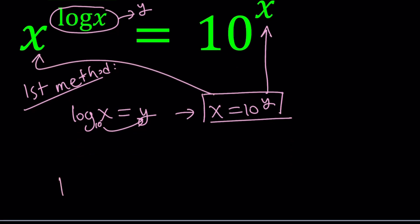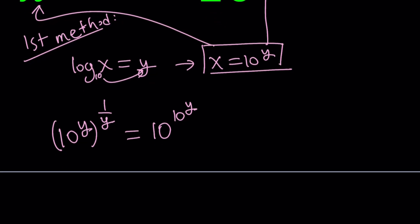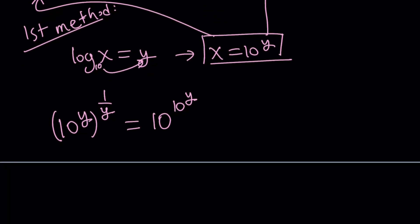Replace x with 10 to the power y. And then 1 over log x is just going to be 1 over y because you replace log x with y, not 1 over log x. We're going to do that next, hopefully. And this equals 10 to the power x, which is 10 to the power 10 to the power y. So kind of like a tower, sort of, a power tower.